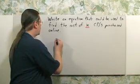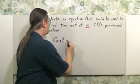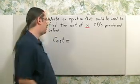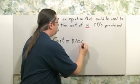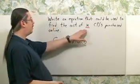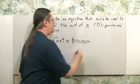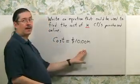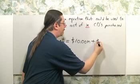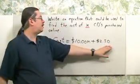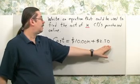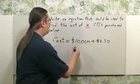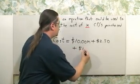If we are interested in finding a cost equation, what do we know? The CDs purchased online cost $10 a piece, so it's $10 times the number of CDs — we're going to have N CDs purchased. There is also a one-time processing fee of $2.50, so I need to add that to my cost equation. You do not multiply this by N because it's just a one-time fee. There is also a shipping charge of $1.50 per CD, so plus $1.50.